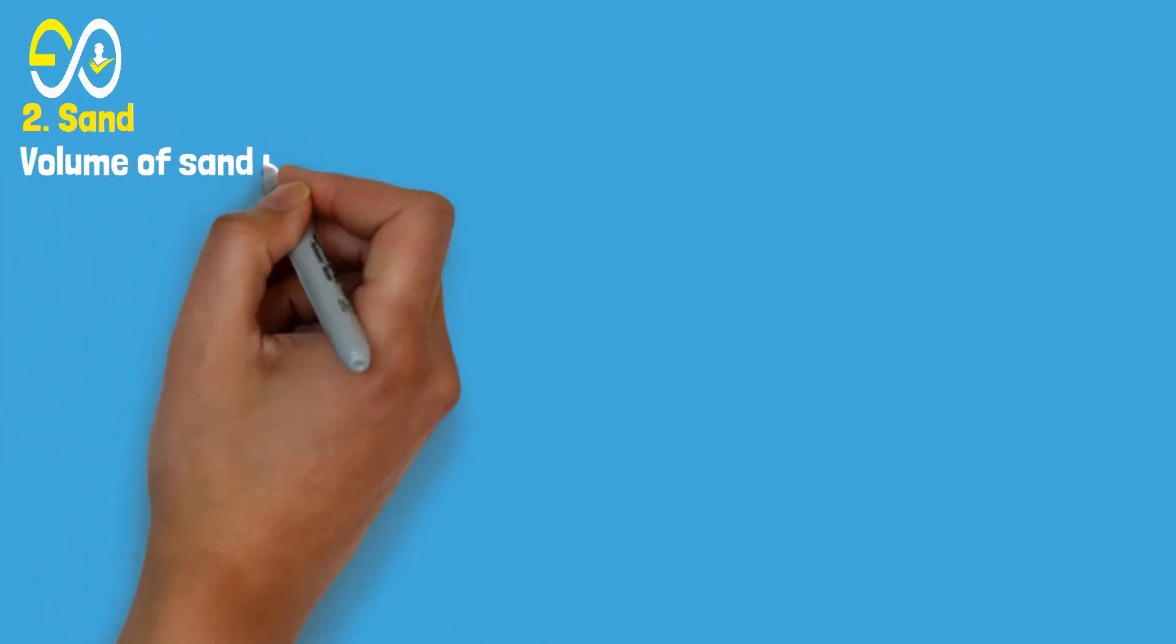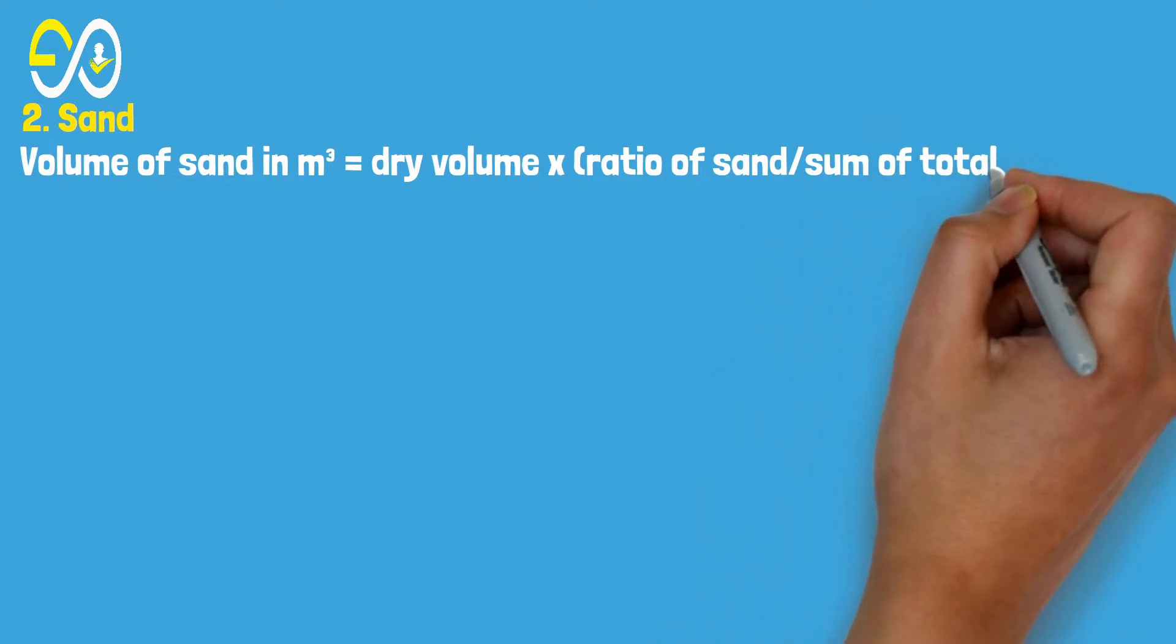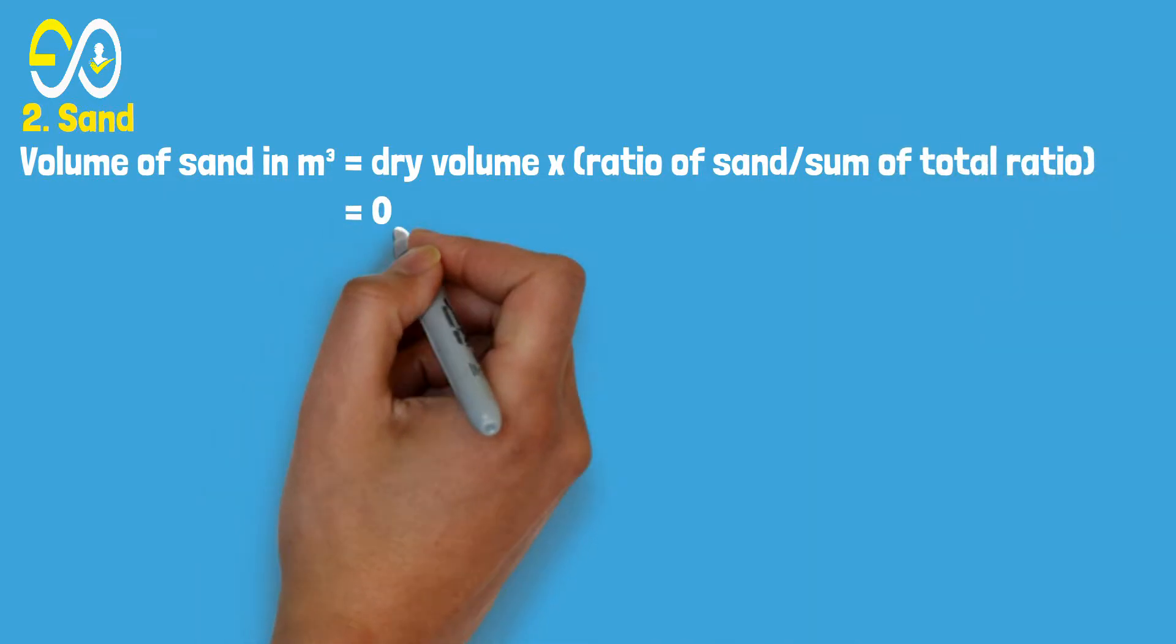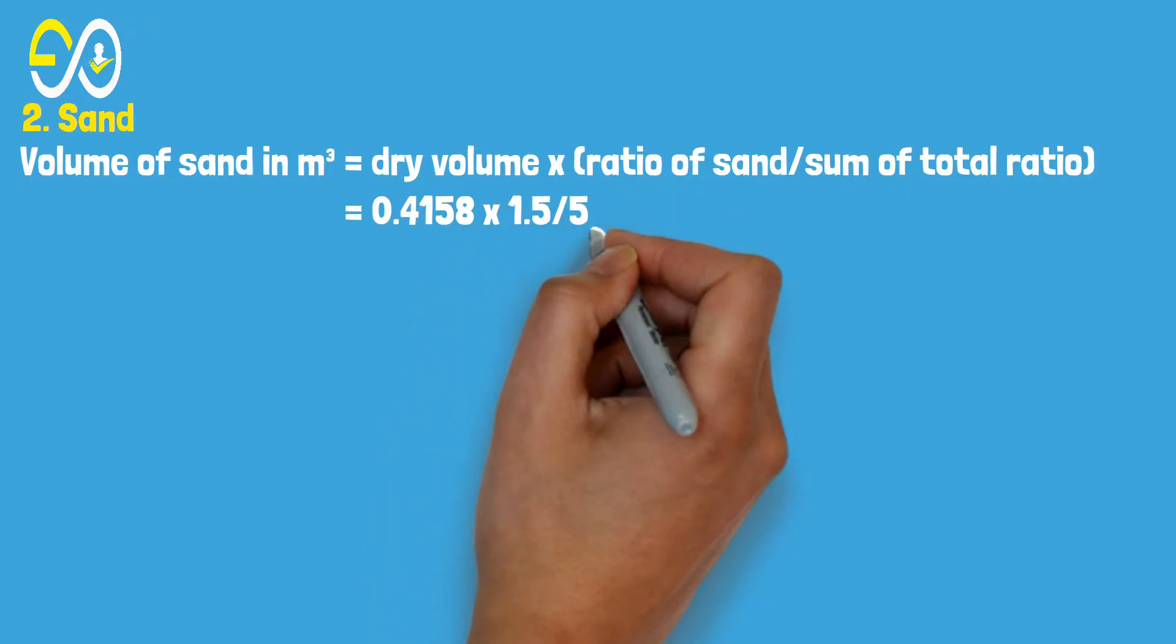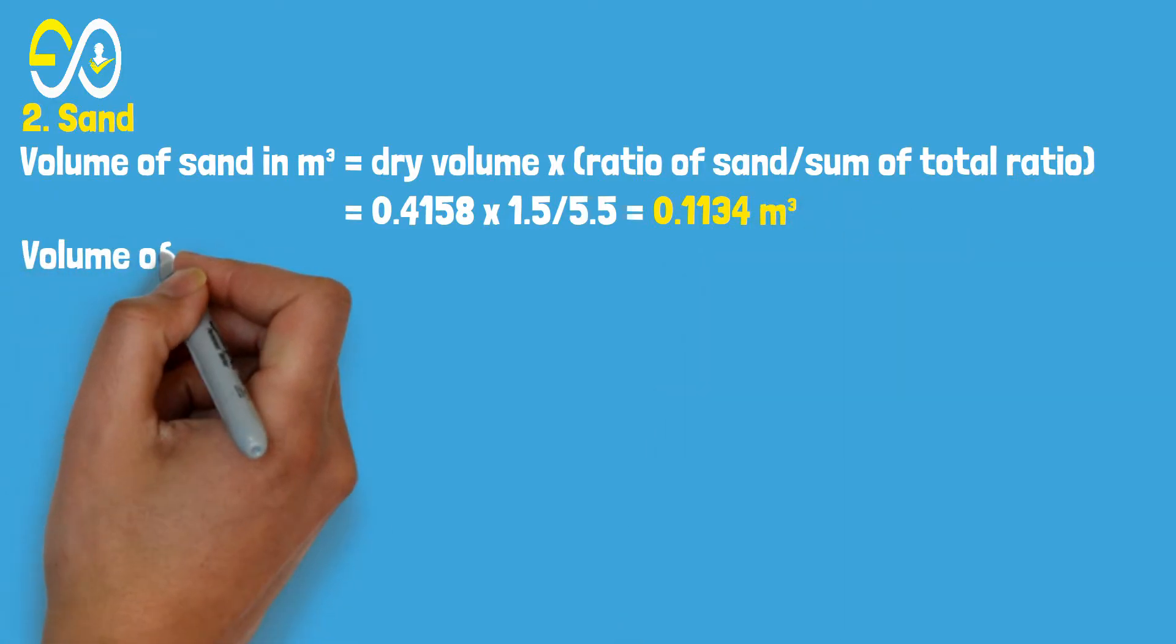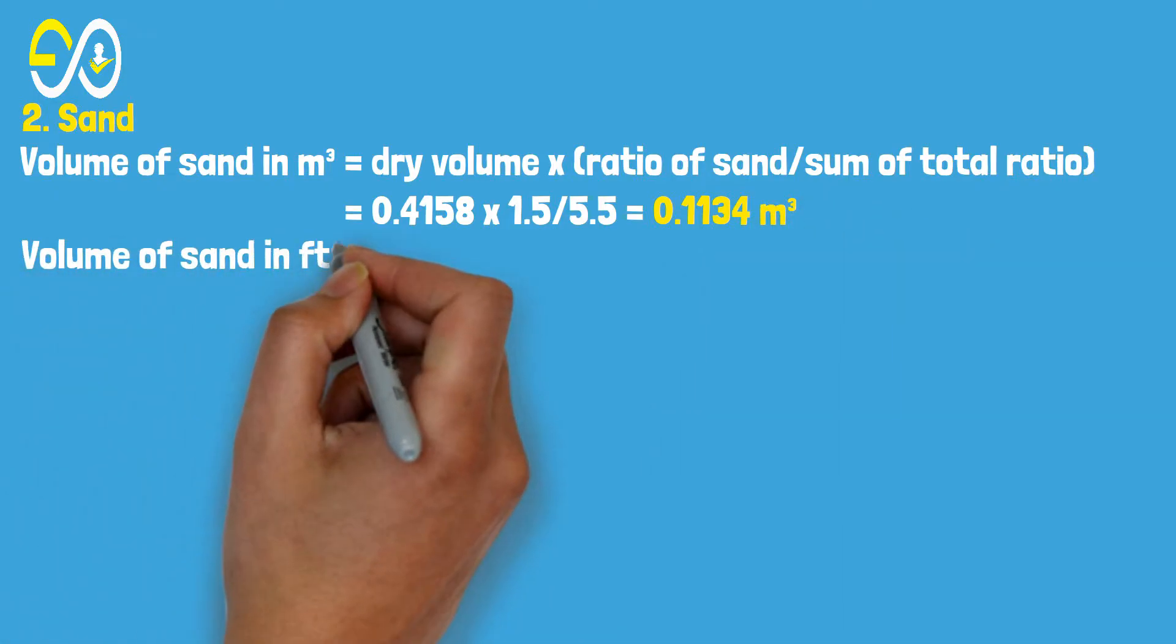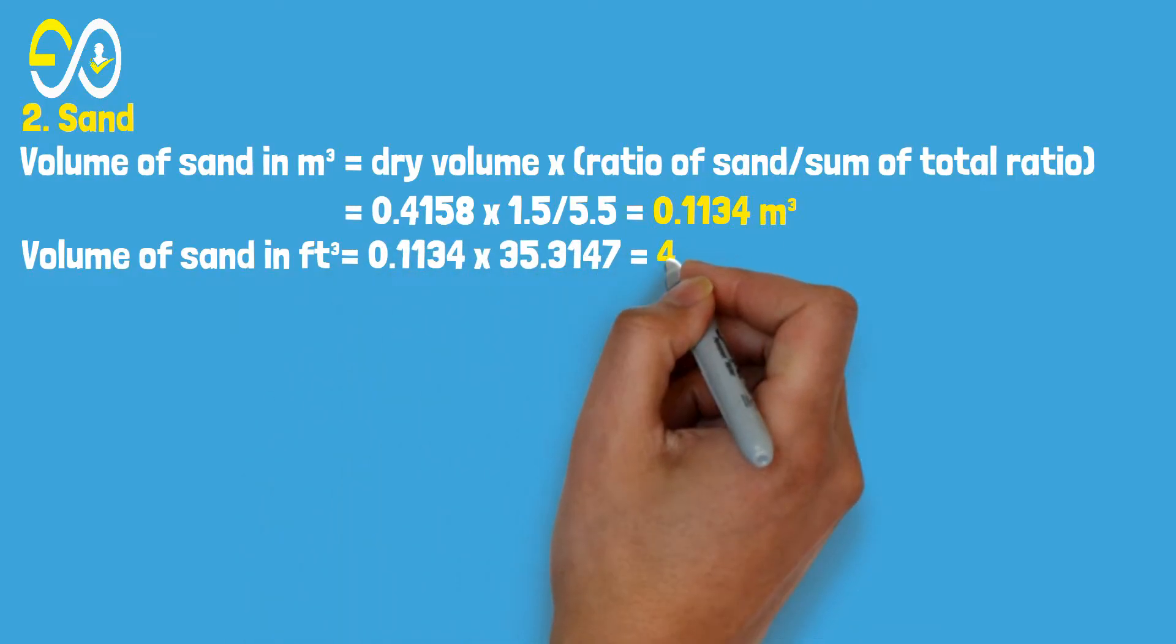Volume of sand in cubic meters equals dry volume times ratio of sand divided by sum of total ratio, which equals 0.4158 times 1.5 divided by 5.5 equals 0.1134 cubic meters. Volume of sand in cubic feet equals 0.1134 times 35.3147, which equals 4 cubic feet.